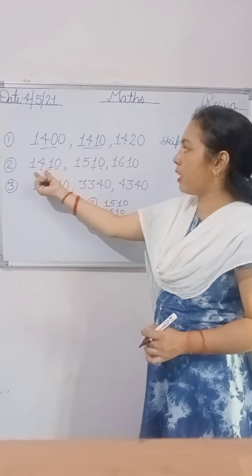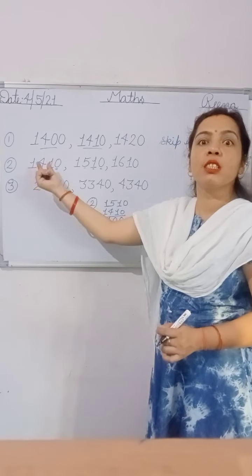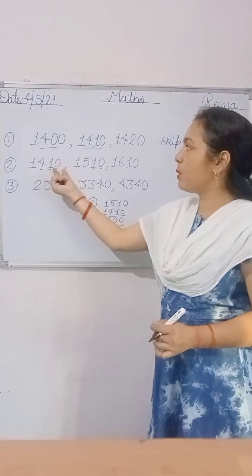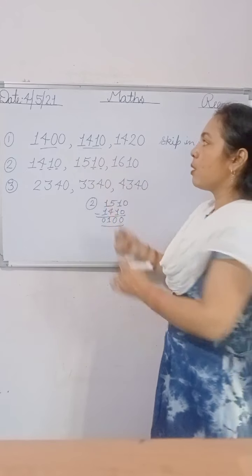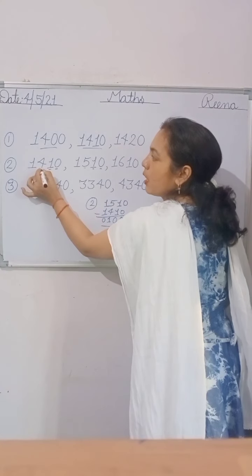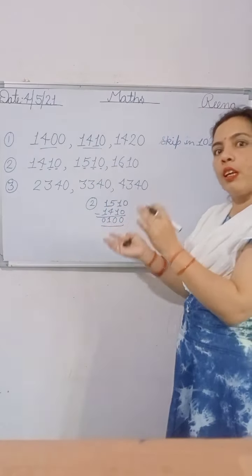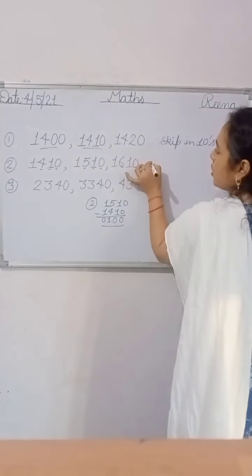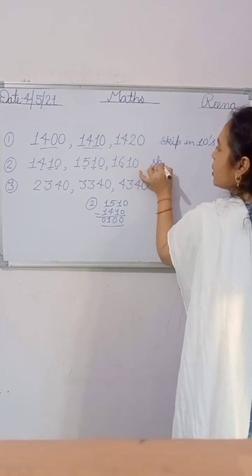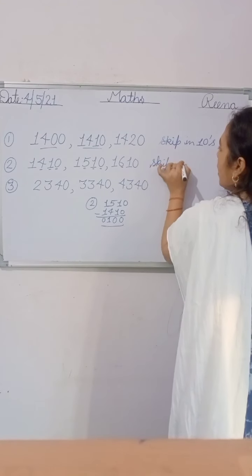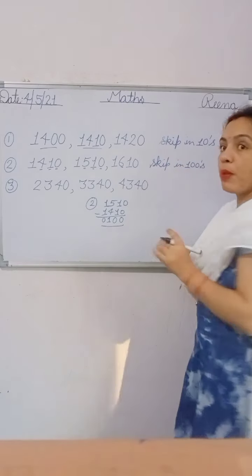That means 100 — only the 100s place is changed. The 1s and 10s places are the same in all numbers, but the 100s place here is 4, 5, 6. That means only the 100s place is changing by 100 numbers. So skip in 100s. Skip means jump — jump forward.